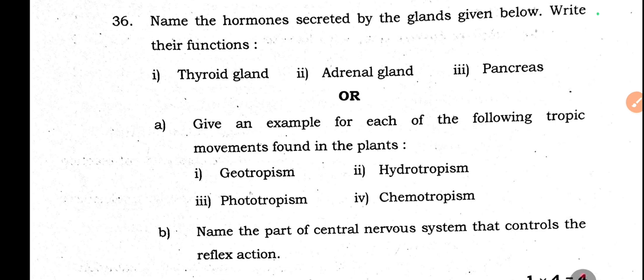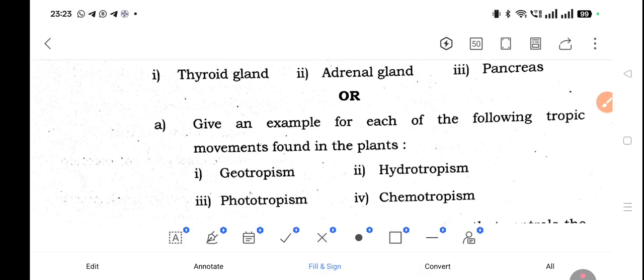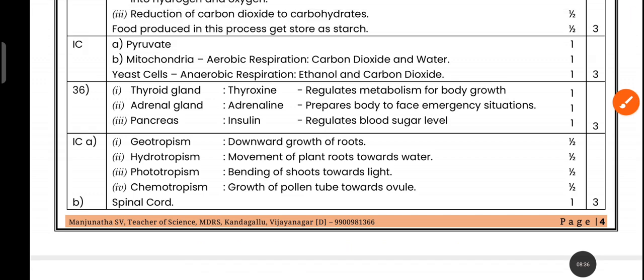Question 36: Name the hormone secreted by the following glands and write their functions. Thyroid gland secretes thyroxine — it regulates metabolism, body growth, and is important for personality development. Adrenal gland secretes adrenalin — it prepares the body to face emergency situations like anger, emotions, and fear.